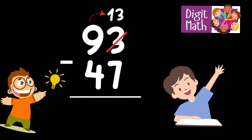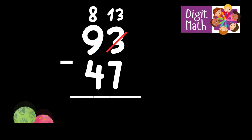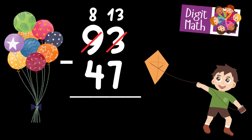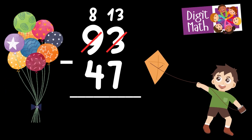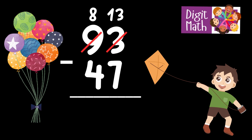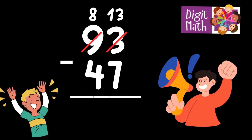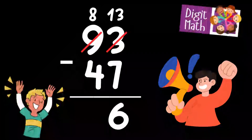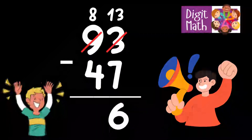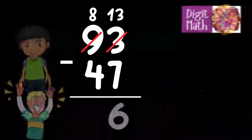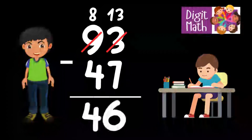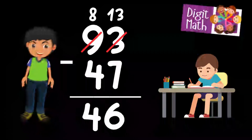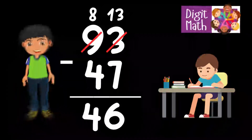In the tens column, we have 9. We take 1 from the tens, leaving 8 in the tens column and turning the units column into 13. Now we have 13 in the units column. Subtract 7 from 13, which equals 6. In the tens column, we now have 8. Subtract 4 from 8, which equals 4. So the final result is 93 minus 47 equals 46.